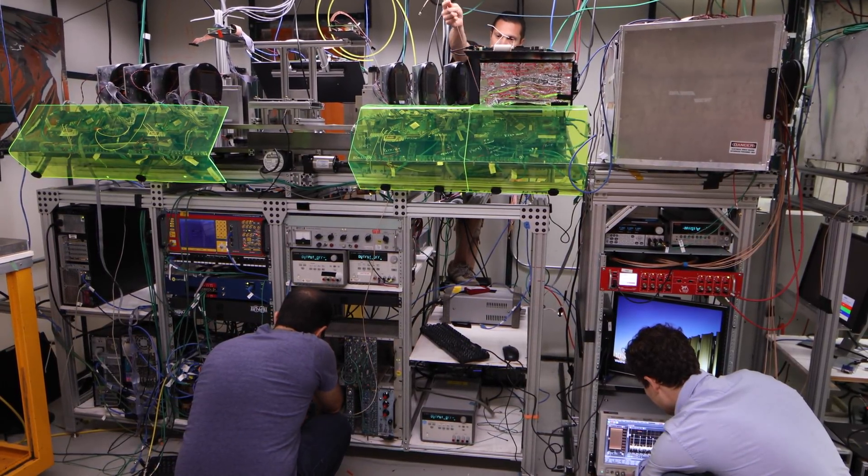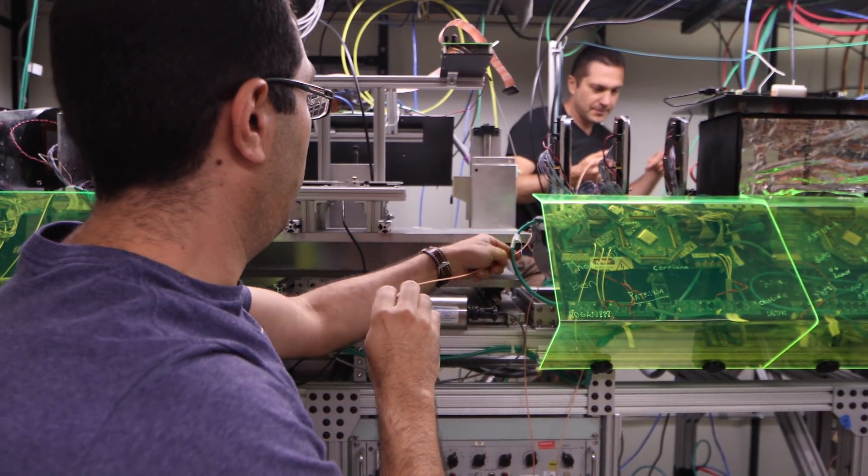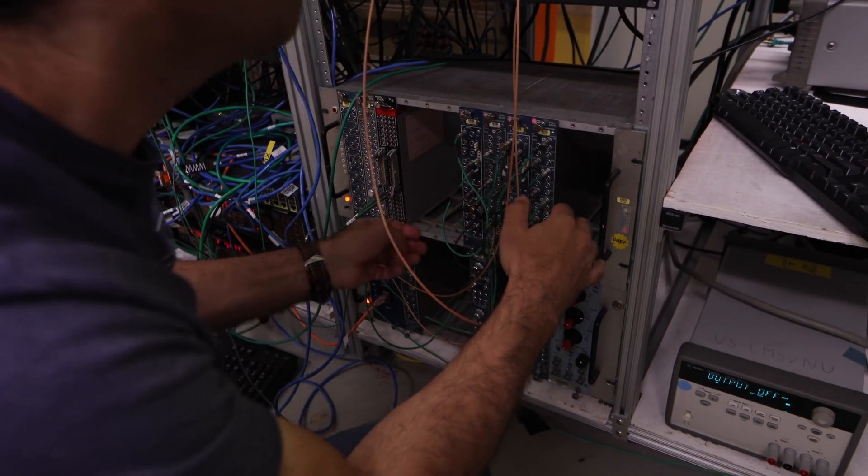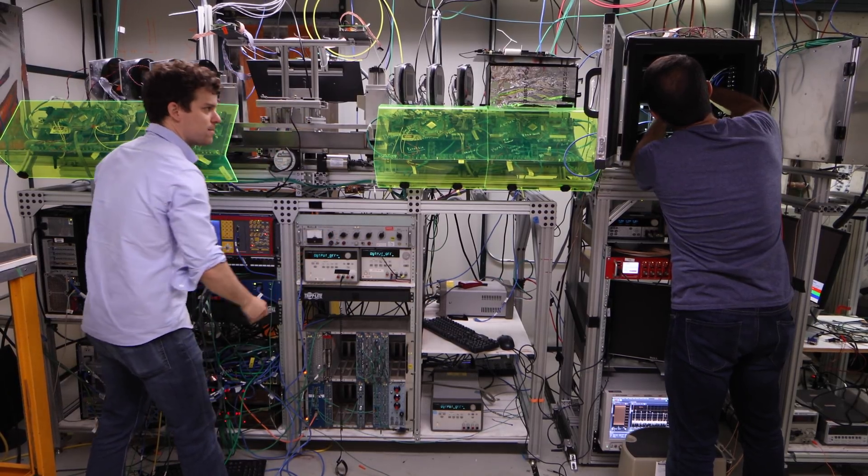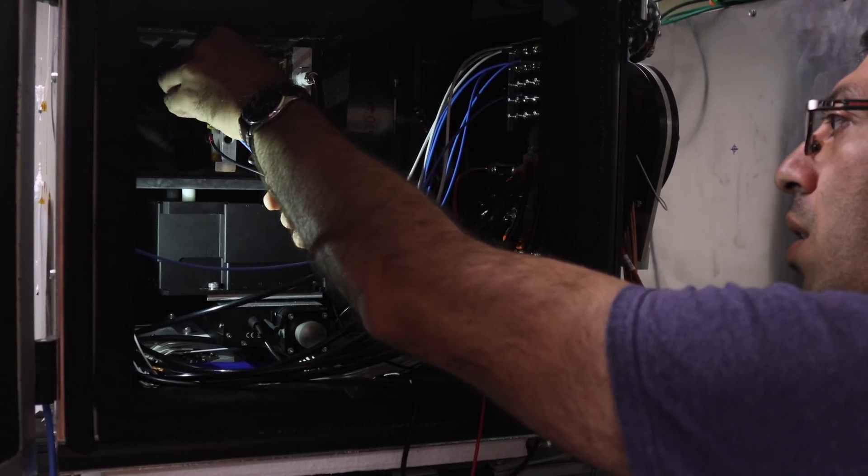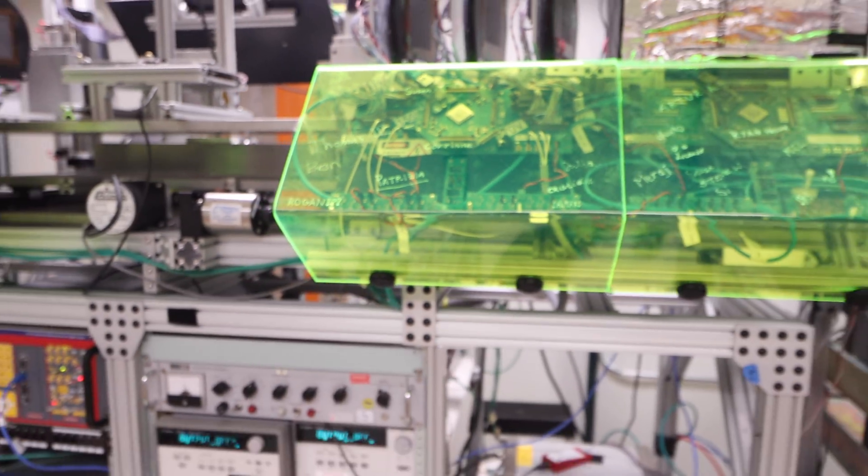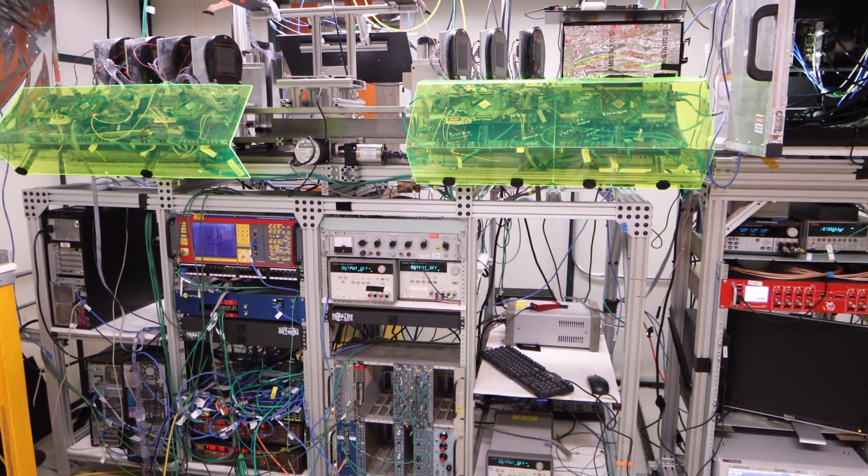However, if we can measure the timing precisely enough, that can help us identify which tracks are the ones we care about. The goal of the timing detector is to measure things with a precision of 30 picoseconds, which is a millionth of a millionth of a second, which will vastly improve our ability to sort everything out.